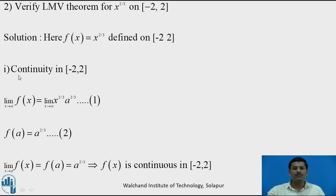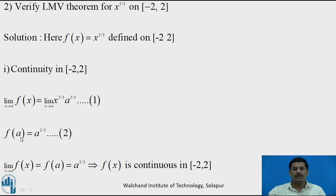Let us check the first condition: continuity of f(x) in [-2, 2]. We find the limit of f(x) as x tends to a, where a is any point in [-2, 2]. As x tends to a, x^(2/3) tends to a^(2/3). The value of the function at x = a is also a^(2/3). Since the limit and the function value are both equal to a^(2/3), by the definition of continuity, f(x) is continuous in [-2, 2].